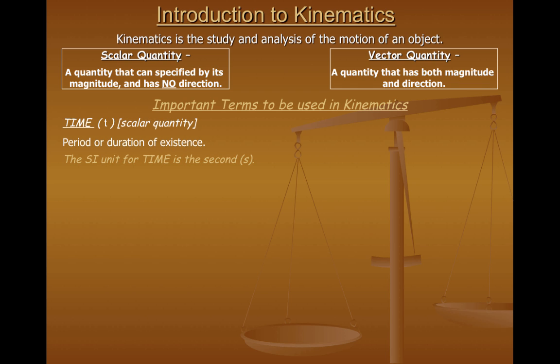So here I've defined time as a period or duration of existence. The SI unit for time is the second. So when we measure time in science, the term that we often use the most is the second. If time is ever measured in units other than seconds, for example, in minutes or in hours or in years, a lot of times we're going to have to convert the values back into seconds.